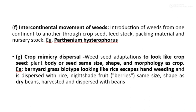Another agency is intercontinental movement — the introduction of weeds from one continent to another through crop seeds, feed stock, packing material, and nursery stock. For example, Parthenium hysterophorus was introduced this way. Some weed seeds can thus be transmitted from one place to another through feed stock and packing materials.